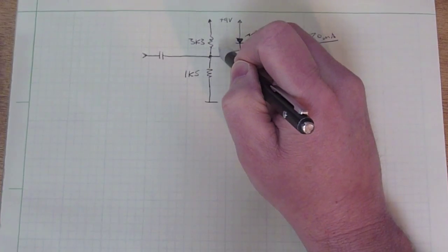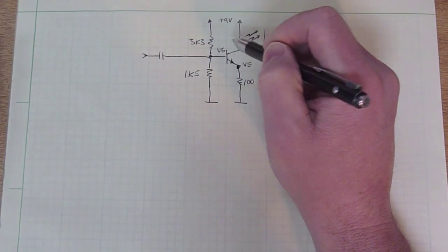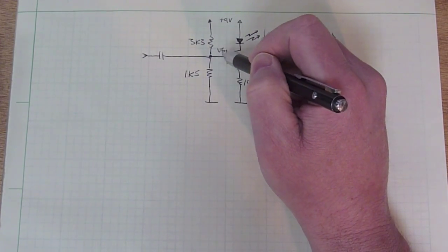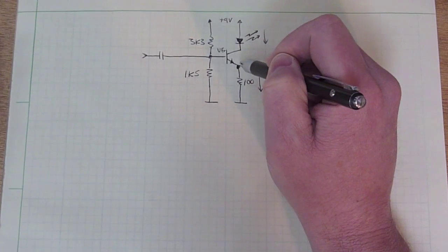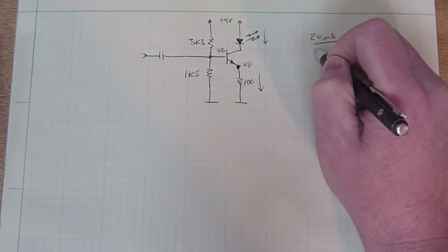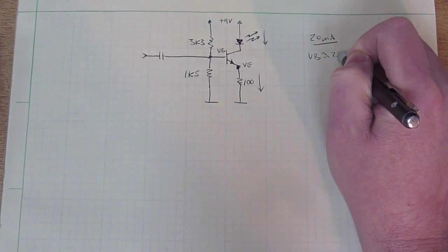That means I need VB to be about 2.6 volts, or 2.7, because there's about seven tenths of a volt drop between the base and the emitter, and that's basically one diode drop. So that's my design. I want VB to be about 2.7 volts.